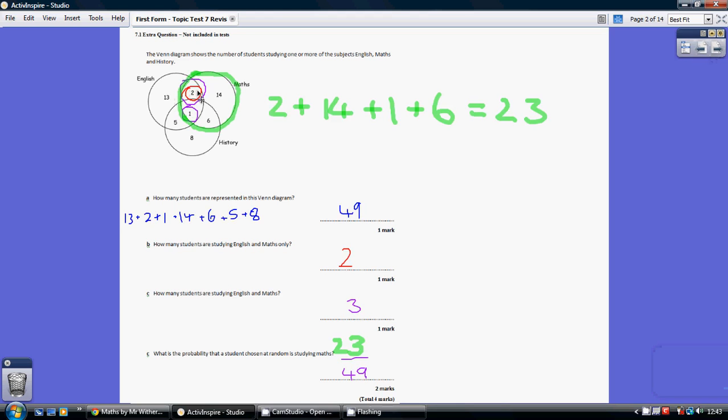So 13 add 2, add 1, add 14, add 6, add 5 and 8, giving us 49. How many students are studying English and maths only?